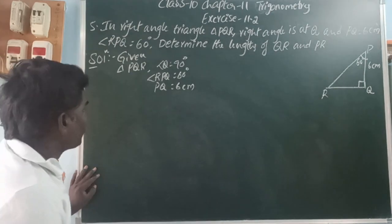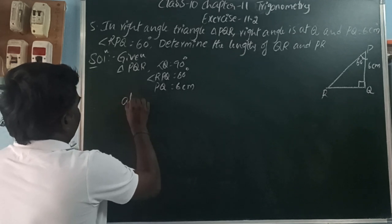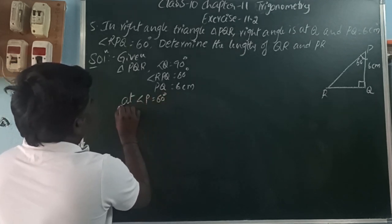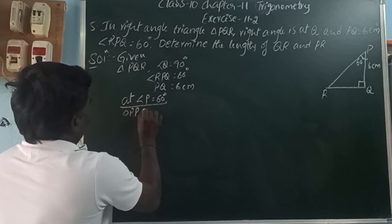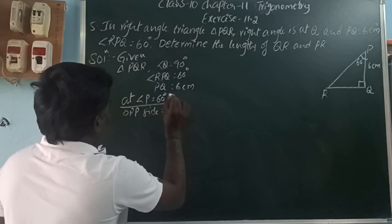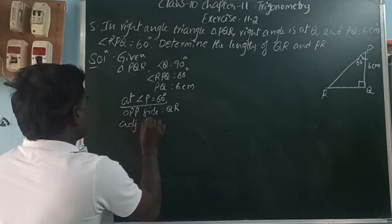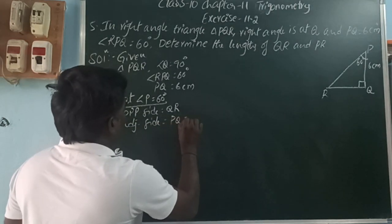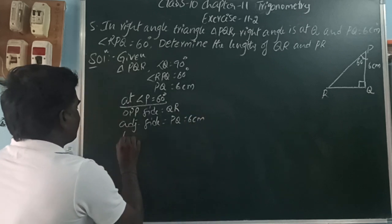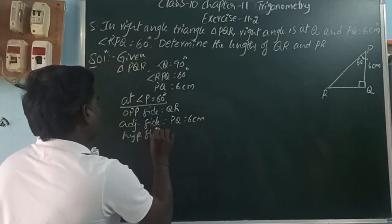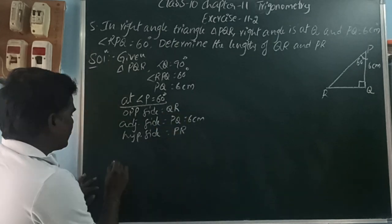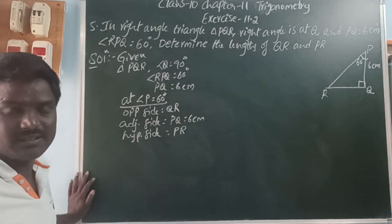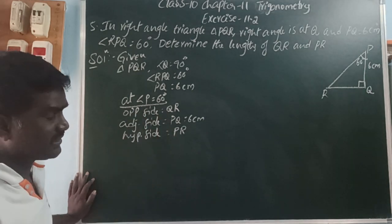We can find these lengths by taking the trigonometric ratios. At angle P, the opposite side is QR, the adjacent side is PQ, and the hypotenuse side is PR. At angle P, we can take the tan ratio using opposite and adjacent sides.